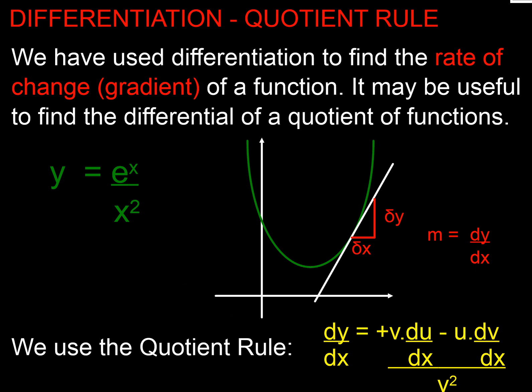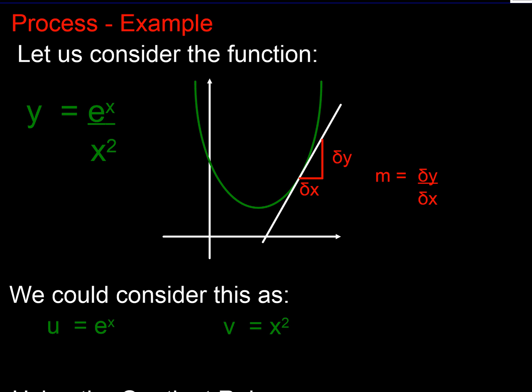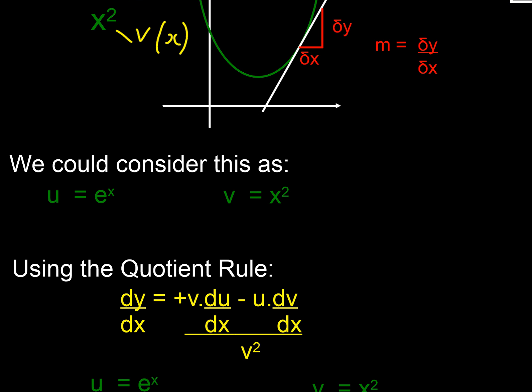Here's an example. Let's use this function: y equals e^x over x². Therefore, our u value is e^x because it's on the top, and v is x² because it's on the bottom.